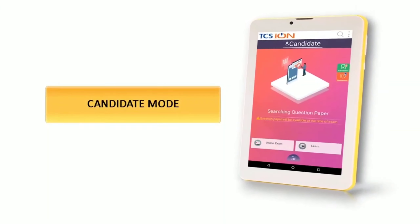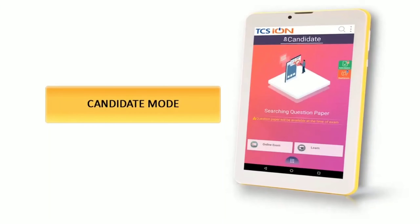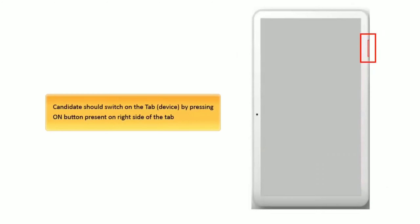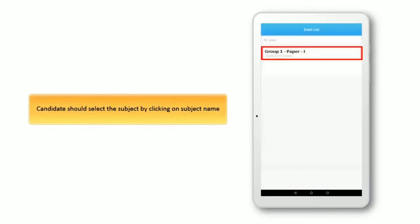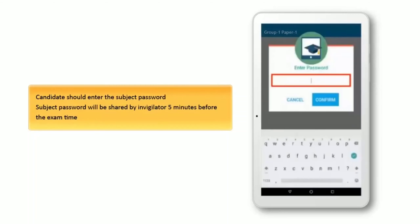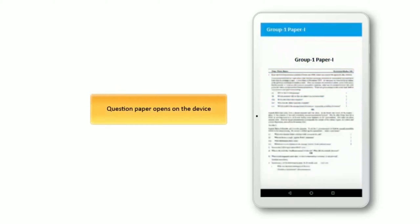Now let us understand the exam process on the TABOT device. The candidate should switch on the TABOT device by pressing the on button present on the right side of the TAB. The candidate should click on Start Exam, then select the subject by clicking on the Subject Name, and enter the Subject Password. The Subject Password will be shared by the invigilator 5 minutes before the exam time. The Question Paper will then open on the device.